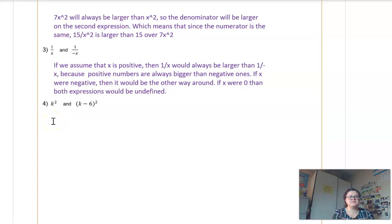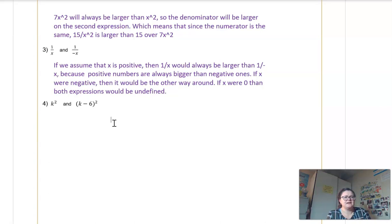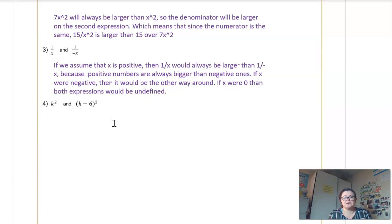The last one: k squared and k minus 6 squared. This one is a little trickier, and the directions say you can plug numbers in if you're struggling. With larger positive numbers — 10 squared would be 100, and 10 minus 6 squared would be 4 squared which is 16 — so anytime you've got bigger positive numbers, k squared is going to be the first one that's larger. But then if we go into negative numbers — say negative 1: negative 1 minus 6 is negative 7, square that and it becomes positive 49. But k squared would just be 1. So if we have negative numbers, k minus 6 squared is going to be larger.